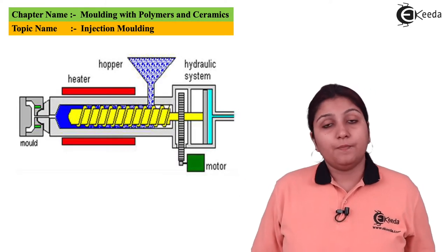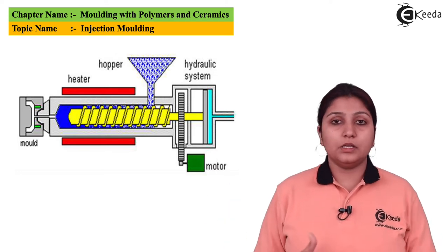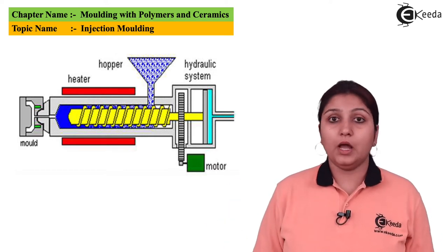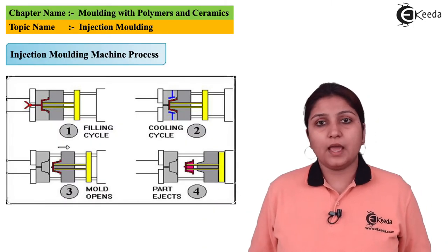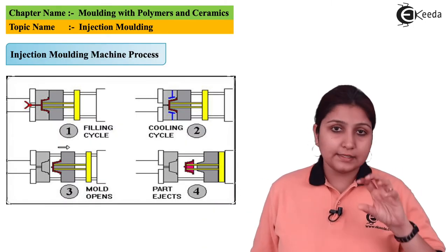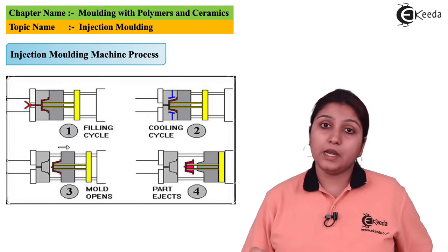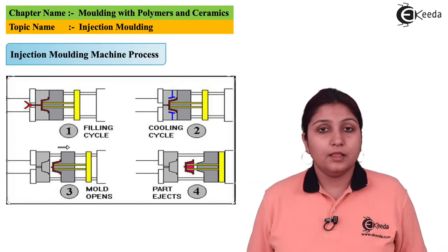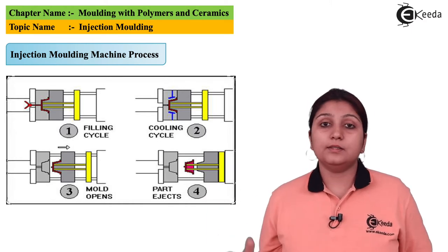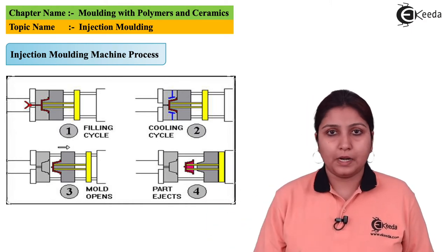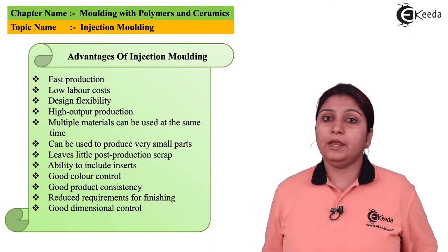This diagram shows the same process again but with a hydraulic system labeled, because the injection molding unit works on a hydraulic process. These four diagrams show the basic stages of how the part is made: first filling of the material is done, then cooling, then the mold opens and the part is ejected — that ejected piece is your molding part.